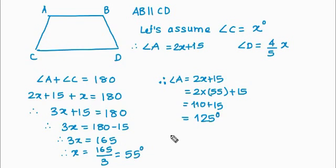Now we know angle D. What is angle D? Angle D is equal to 4 fifth of x. So 4 fifth of x into x. X is 55. We have found it. 5 ones are 5, 5 elevens are 55. So that is equal to 4 into 11, 44 degrees.